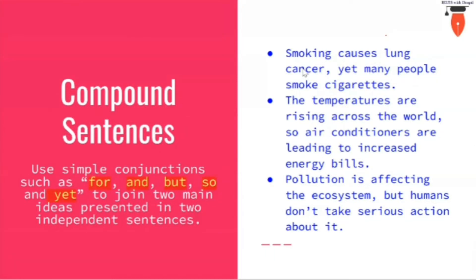Let's understand this with the help of an example. We have two ideas: the first is 'smoking causes lung cancer' and the second is 'many people smoke cigarettes.' We are joining these two sentences using 'yet' because these two ideas are opposite to each other — people know that smoking causes lung cancer and yet still smoke cigarettes. So we have used two simple ideas and created a more complicated one. Another example: 'The temperatures are rising across the world' and 'air conditioners are leading to increased electricity bills' — we add them together using 'so.'